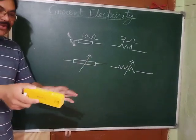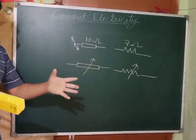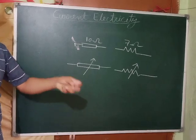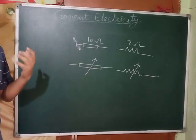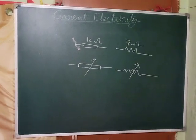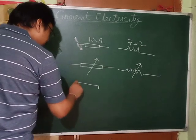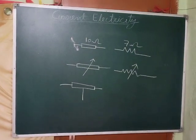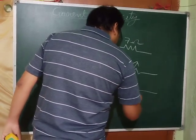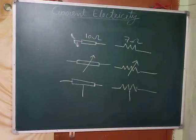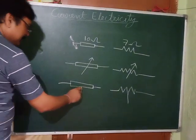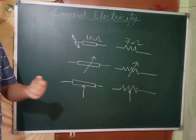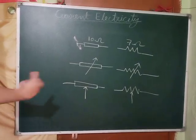Suppose a battery of 12 volt is connected but you require only 1.5 volt — you need to change the potential difference. For that we have potential dividers, whose symbols look like a resistor with a sliding contact. These circuit symbols for potential divider allow you to adjust the potential according to your requirement.